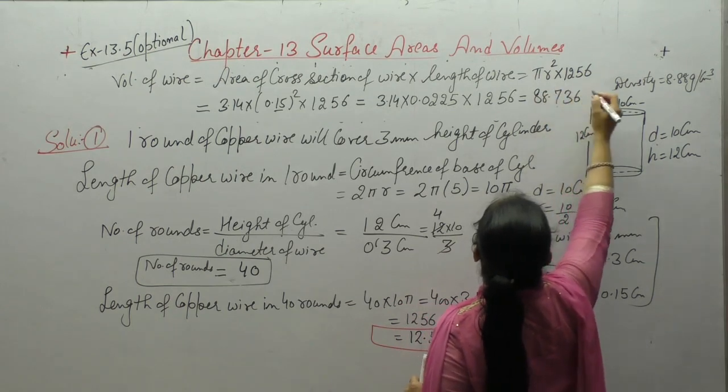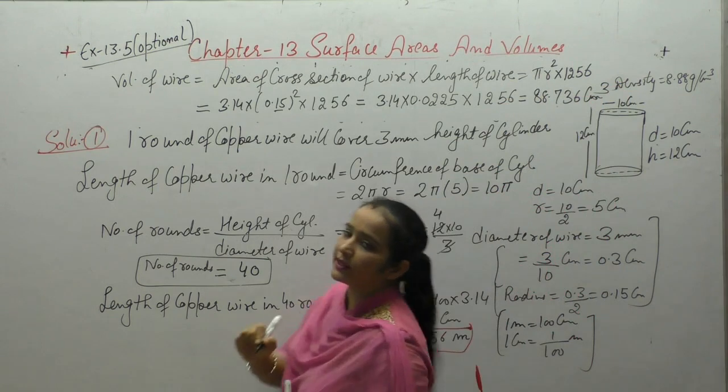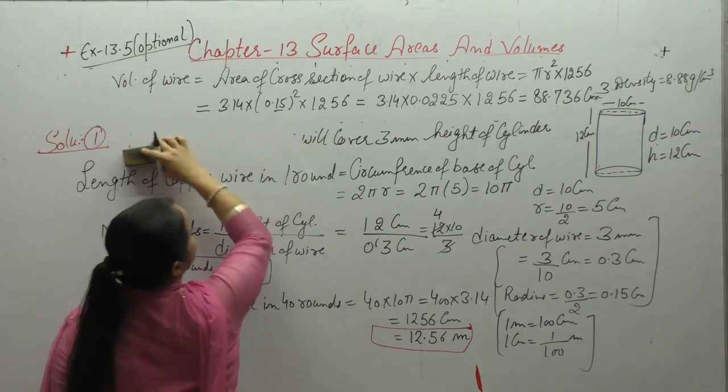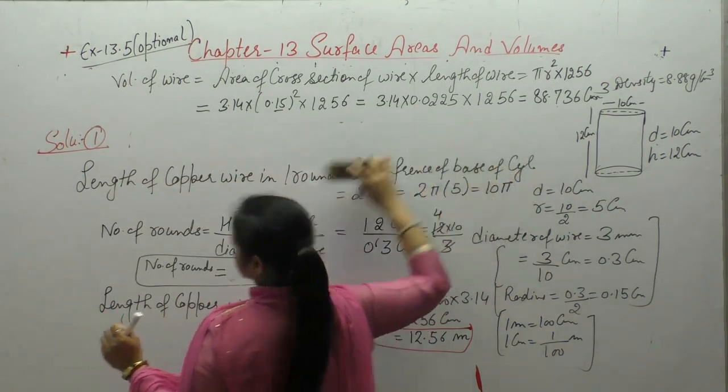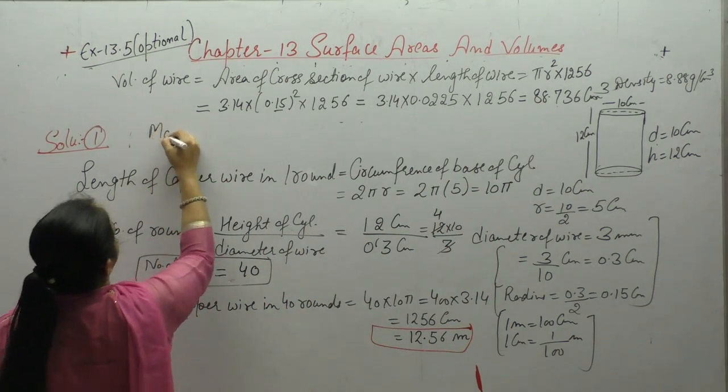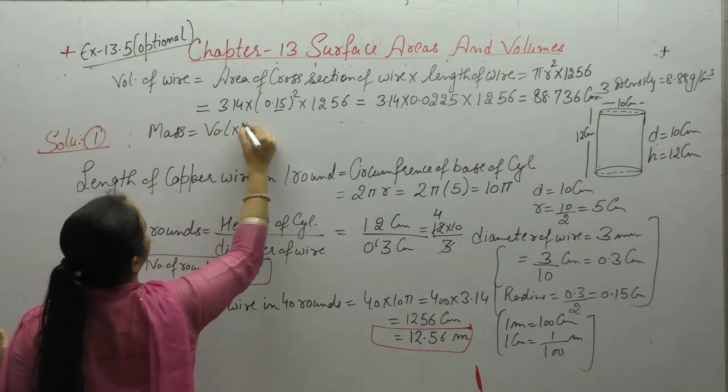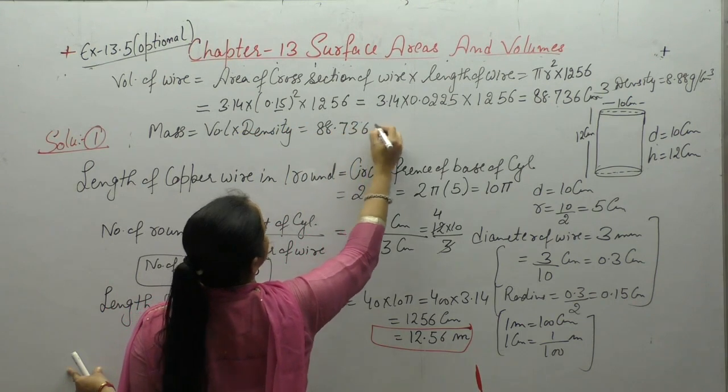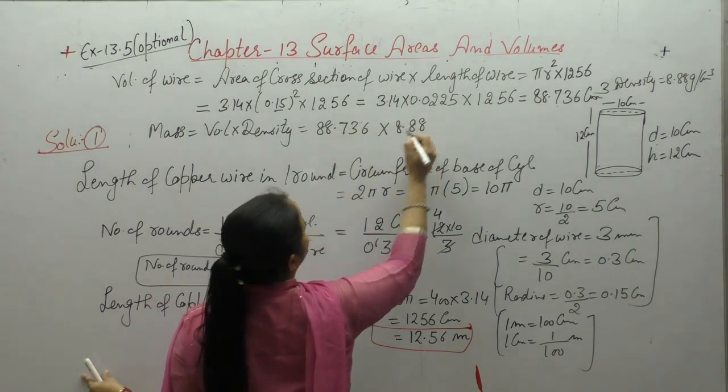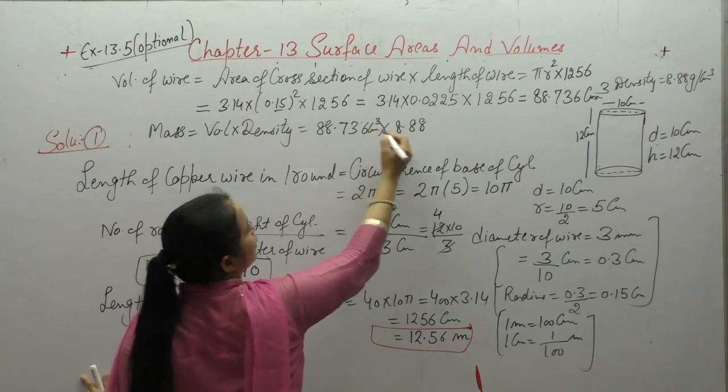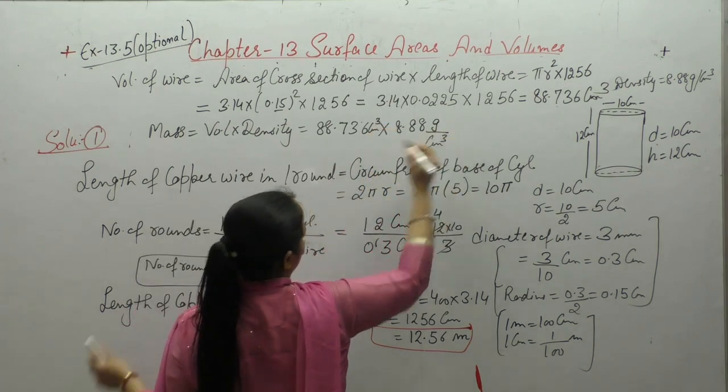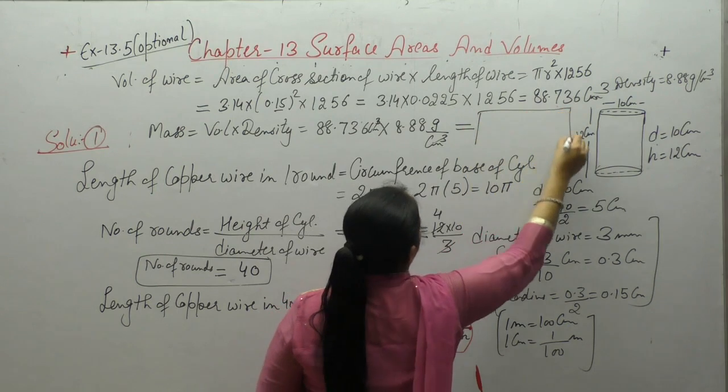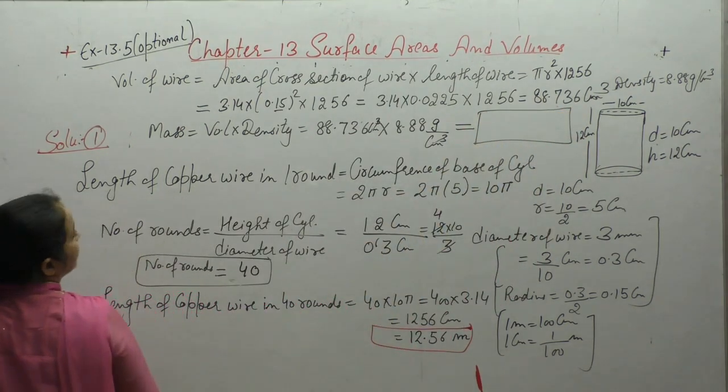Now volume is in cm³. Now we need to find mass. So write down: mass equals volume into density. Volume value: 88.736. Density we have: 8.88. This is in cm³ and this is grams per cm³. So cm³ unit will cancel.